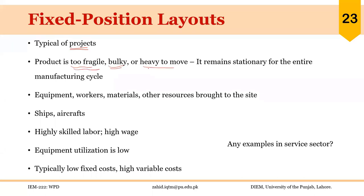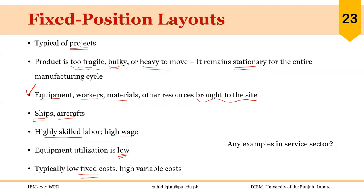In fixed position layout, the product is too fragile, too bulky, or too heavy to move, so the product remains stationary for the entire manufacturing cycle. Equipment, workers, materials, and other resources are brought to the site — they move to the product. Classical examples of products requiring fixed position layout are ships and aircraft. Highly skilled labor is needed and generally wages are high in this type of industry, with high profit margins for the organization. Equipment utilization is low, fixed costs are typically low, but variable costs are high.